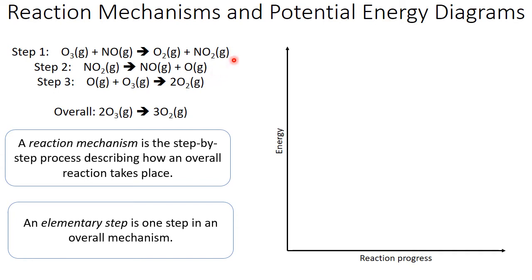An elementary step is one step in an overall mechanism. You can see that our mechanism has three elementary steps. These have a direct bearing on what we see in a potential energy diagram for a reaction.